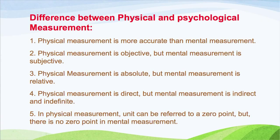Physical measurement is direct and mental measurement is indirect. Additionally, in physical measurement, units can be referred to a zero point. Physical measurement starts with a zero point, but there is no zero point in mental measurement. So when a student gains zero marks in an intelligence test, it doesn't mean that the student has no intelligence — we cannot gain an accurate measurement because it is not direct and absolute.